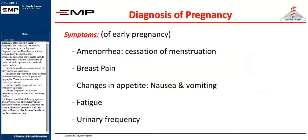Symptoms suggestive of pregnancy include: Amenorrhea, which is the cessation of menstruation in a patient with previously regular periods; Breast pain and heaviness are also early suggestive symptoms; Changes in appetite which take the form of nausea, vomiting, loss of appetite and dyspepsia — these are sometimes called emesis gravidarum; Fatigue, usually the patient feels tired with effort intolerance; Urinary frequency, due to pressure by the gravid uterus on the urinary bladder. Keep in mind that all these symptoms are only suggestive of pregnancy and not conclusive, because the same symptoms can occur in the absence of pregnancy.